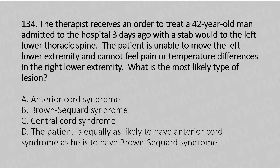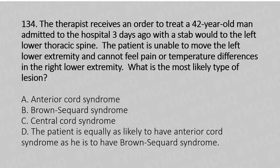The therapist receives an order to treat a 42-year-old man admitted to the hospital three days ago with a stab wound to the left lower thoracic spine. The patient is unable to move the left lower extremity and cannot feel pain or temperature difference in the right lower extremity. What is the most likely type of lesion? Option A: Anterior cord syndrome. Option B: Brown-Séquard syndrome. Option C: Central cord syndrome. Option D: The patient is equally as likely to have anterior cord syndrome as Brown-Séquard syndrome. And the answer is Option B, Brown-Séquard syndrome.